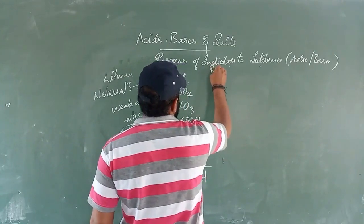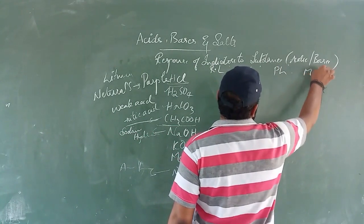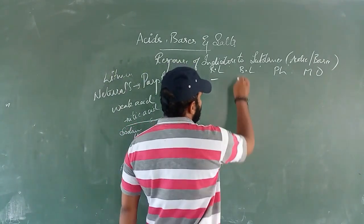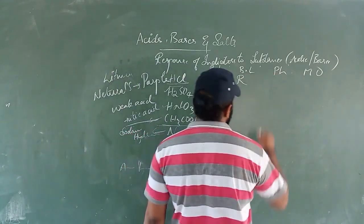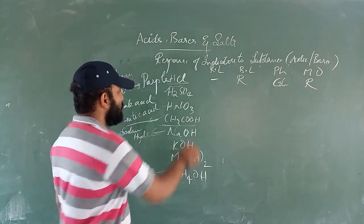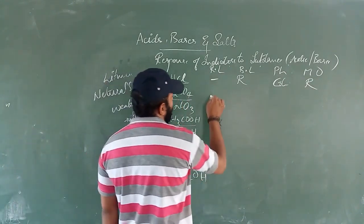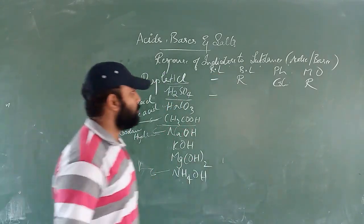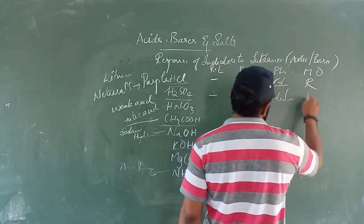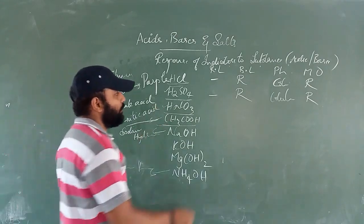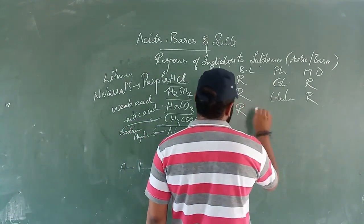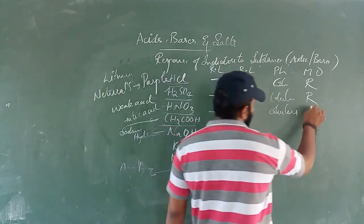For HCl: red litmus — no change; blue litmus — changes to red; phenolphthalein — colorless; methyl orange — red. For H₂SO₄ and HNO₃ (both acids): red litmus — no change; blue litmus — turns red; phenolphthalein — colorless; methyl orange — red.